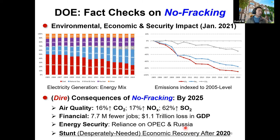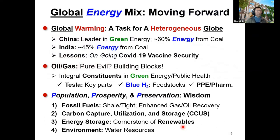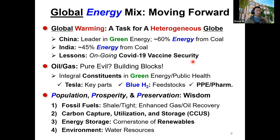When we consider the global energy mix moving forward, we need to recognize that global warming is a truly global issue requiring global action, but we live on a heterogeneous globe. For example, China leads in green energy yet 60% of its energy comes from coal, and India — an emerging economy — gets 45% of energy from coal. We also need to learn from COVID-19 vaccine security: it's a pandemic requiring global action, but nations are prioritizing vaccines for their own people.